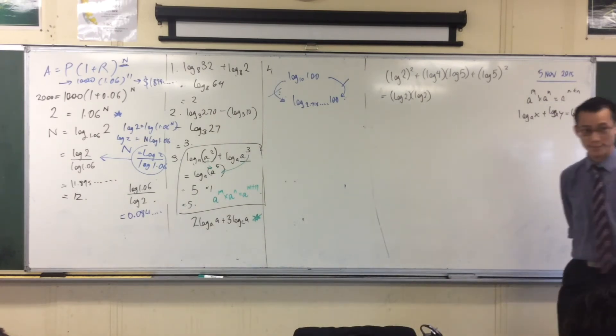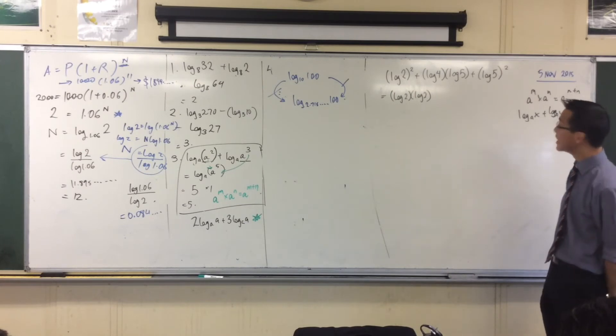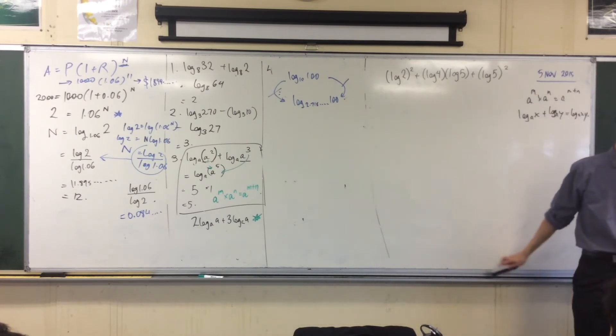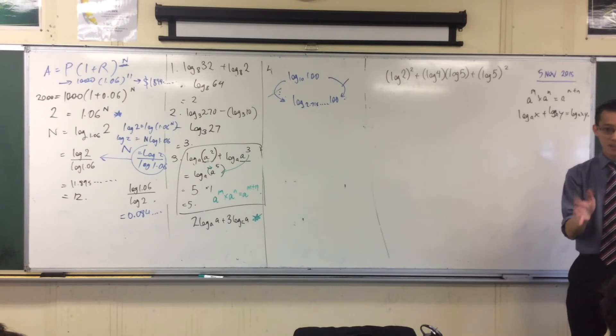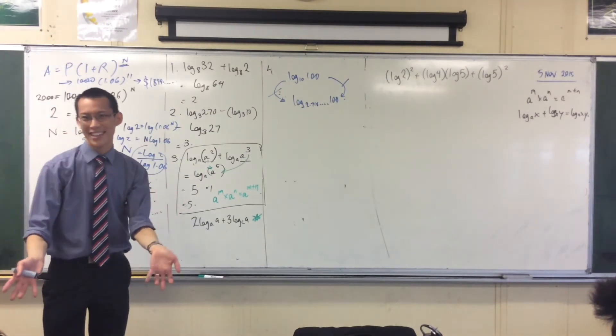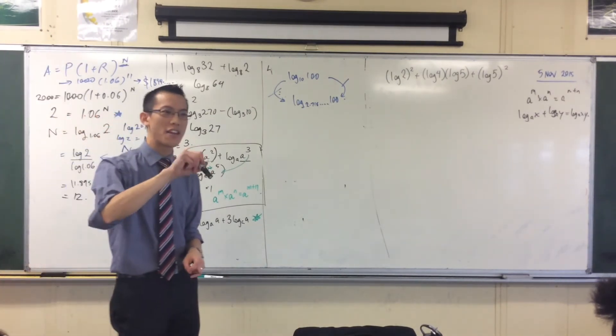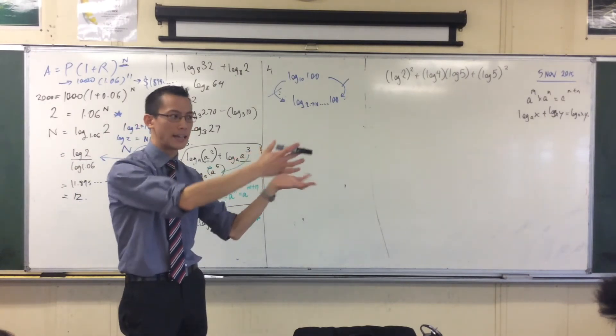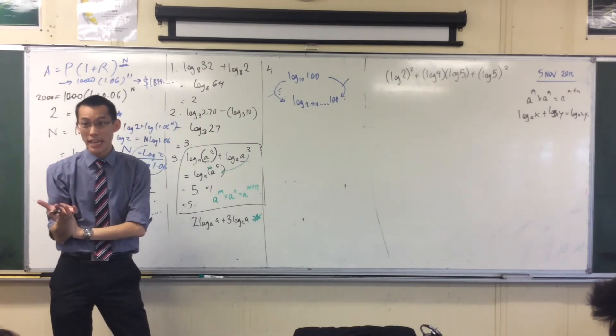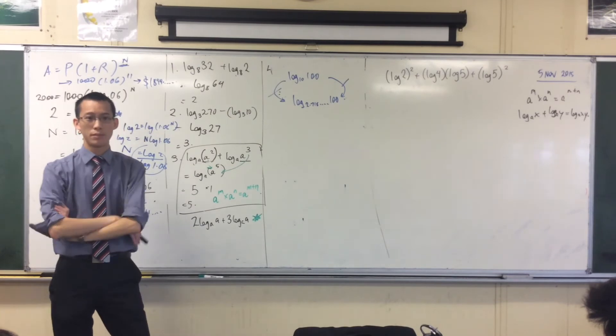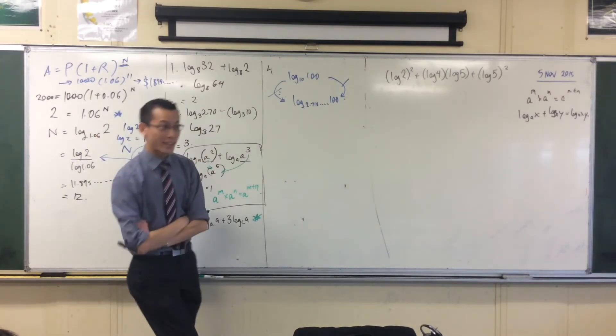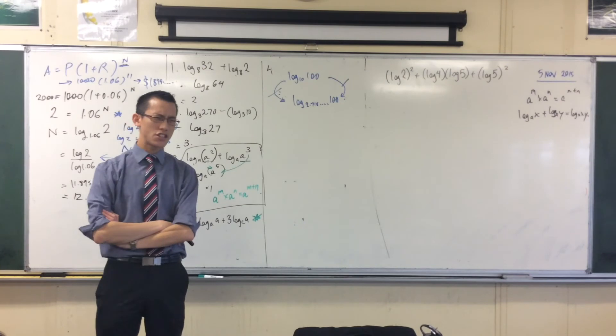For example, on your calculator, I've already told you what log without a base means, it means base 10. But if you go into 2 unit next year, which I hope a lot of you will, those textbooks, when they write this, they do not mean base 10. They're like, I'm a mathematician, you know, go away, I want base e, that's the important base, right? Here, I don't know, and part of the point is that it's immaterial to the question.